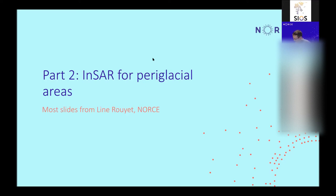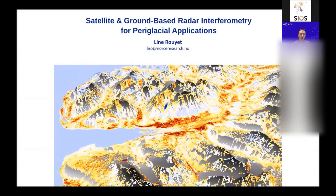Welcome back for the second part, focusing on InSAR for periglacial areas with many examples from Svalbard, most contributed by a PhD student colleague at NORS working in Svalbard. This image from Adventfjorden in Svalbard clearly shows many different colors, meaning there is a lot of ground motion going on in the valley, in the hillsides, and almost everywhere.